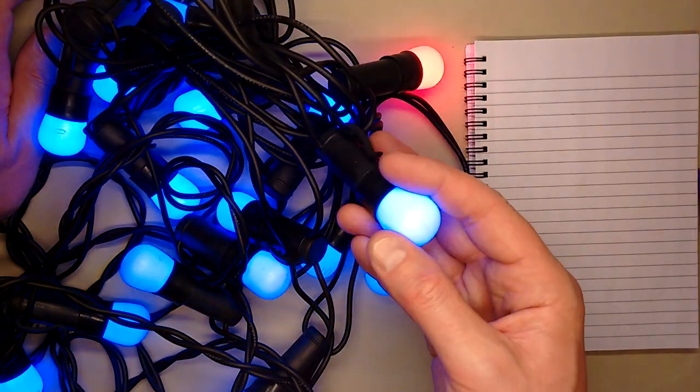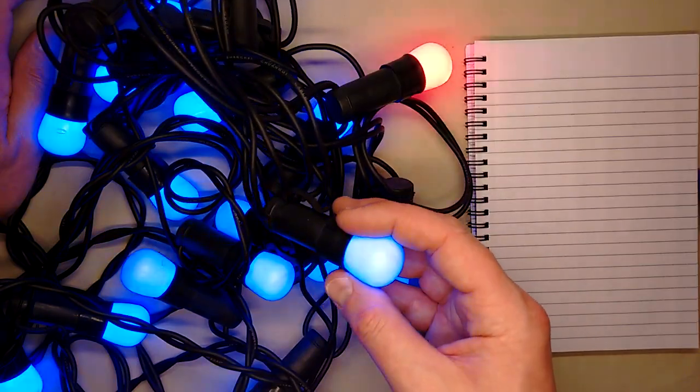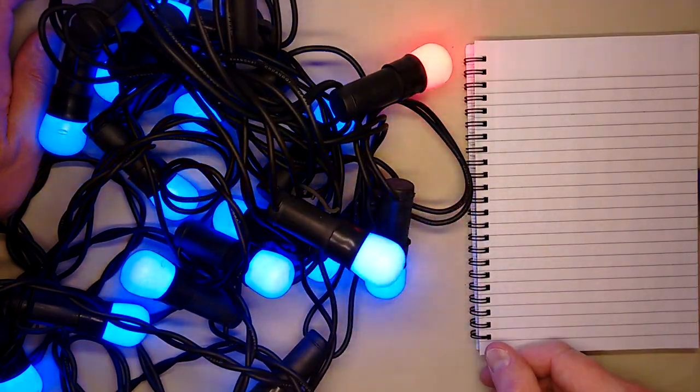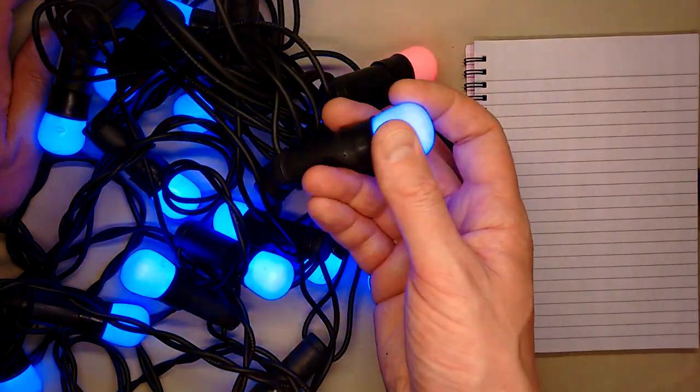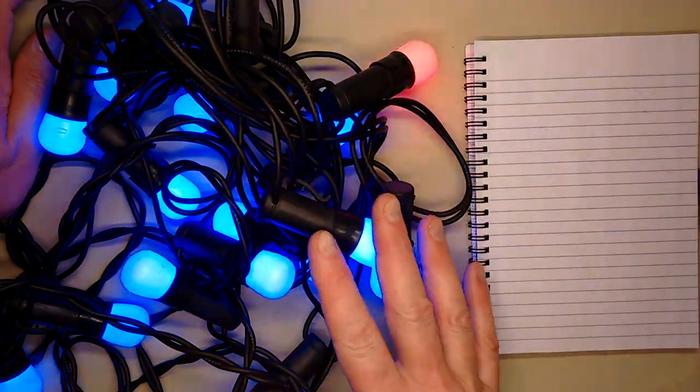This set of pygmy style festoon lights is a real blast from the past. It's a really early LED set and I remember when they first appeared I thought that's amazing - they look great, they're LED, super low energy, but there is a visible flicker.